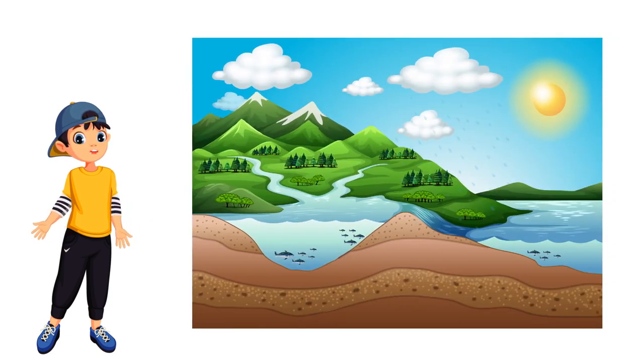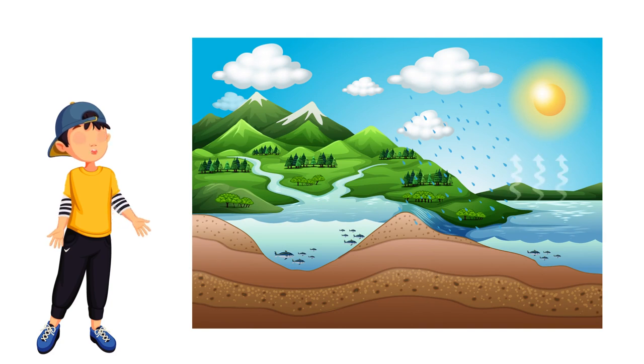When acid rain falls down and flows into rivers and ponds, it affects the aquatic ecosystem. It alters the chemical composition of the water.